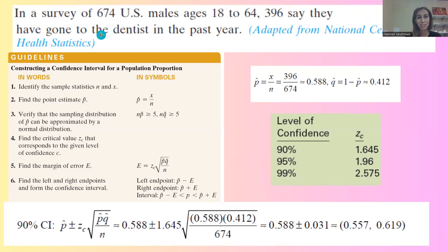In this question, we're going to build a 90% confidence interval. You need to follow the guidelines. The guidelines say you need to identify the sample statistics n and x.